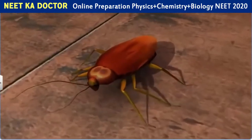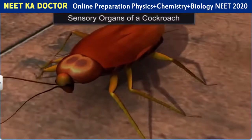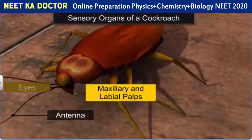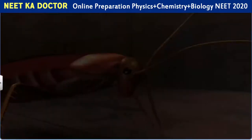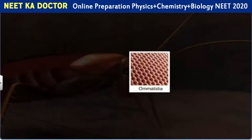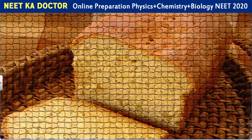Besides a well-developed nervous system, cockroaches also have many sensory organs such as antennae, eyes, maxillary and labial palps and anal cerci. The head bears a pair of large compound eyes and each eye consists of about 2,000 hexagonal ommatidia. These ommatidia form a mosaic vision of an object with low resolution. This vision is also known as nocturnal vision.